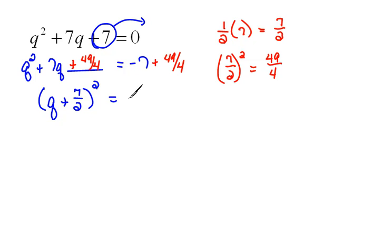Quantity squared equals, and now we have negative 7 plus 49 over 4. Now we need to get a common denominator. So negative 7 plus 49 over 4. It looks like our common denominator would be a 4. So this would be a negative 28 instead of a negative 7. Negative 28 over 4 is negative 7. And when we combine these two things, negative 28 over 4 plus 49 over 4, that would be a positive 21 over 4. So negative 7 plus 49 fourths is 21 over 4.